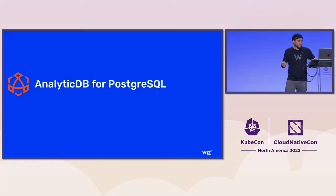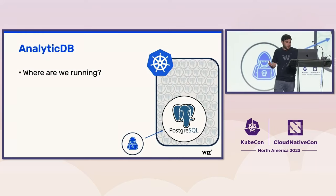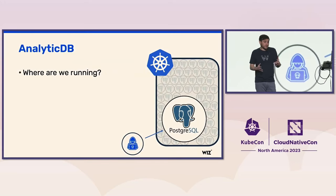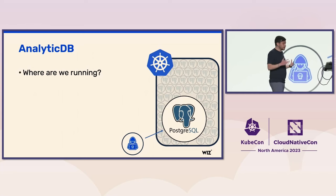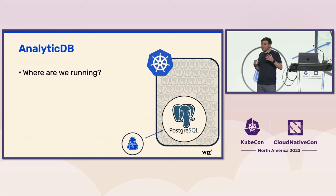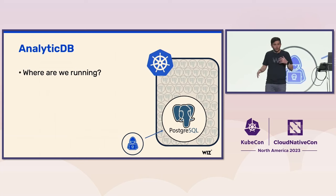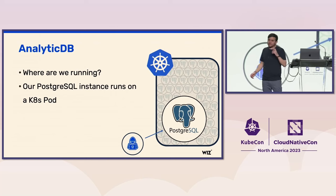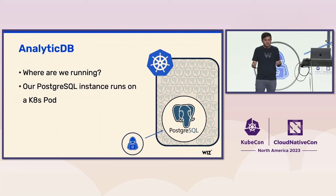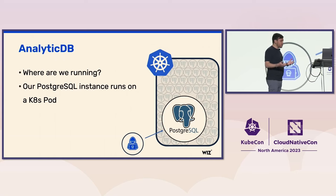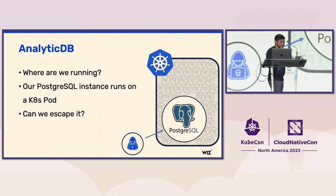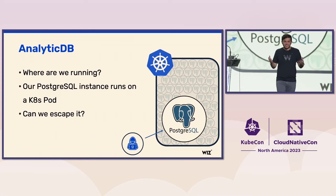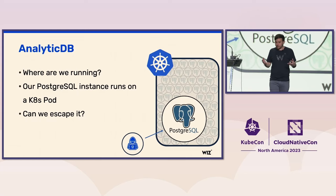After we gained code execution, the first thing we asked ourselves was: okay, we're running code on something — where exactly? What sort of infrastructure does the database have? So we started looking at the file system, the processes, the network, and so on, until we figured out this is a Kubernetes environment. Our database instance runs on a Kubernetes pod, which of course begs the question: how can we actually escape that pod? We don't want to be chained — we want to break out of jail and see what actually happens on the underlying infrastructure.